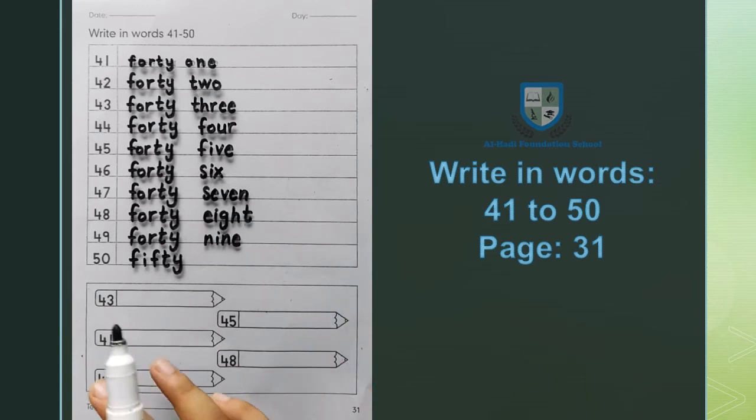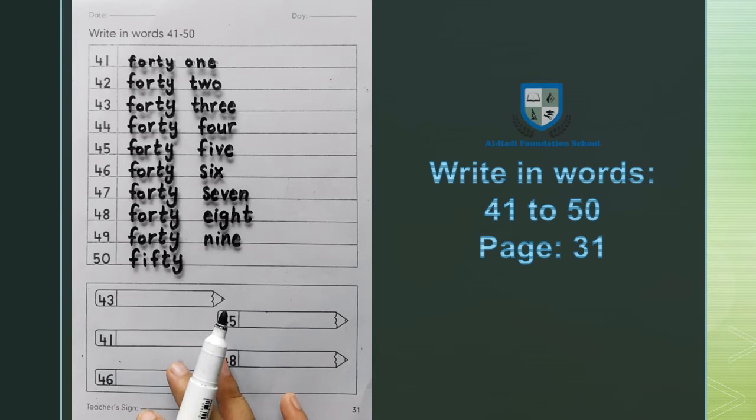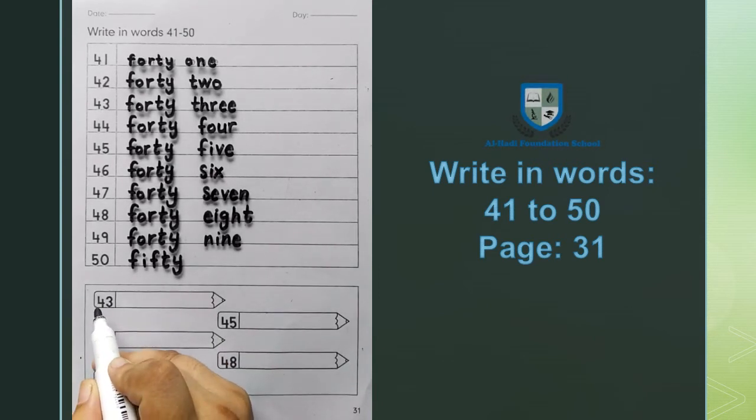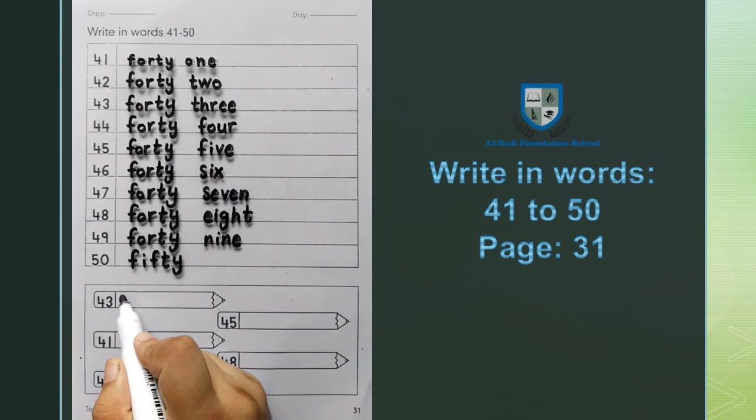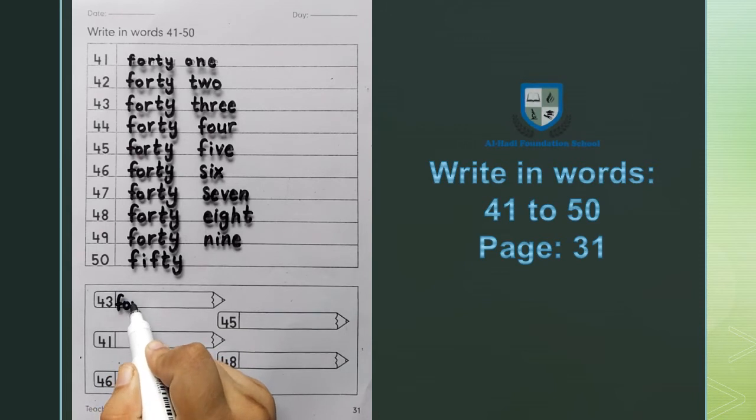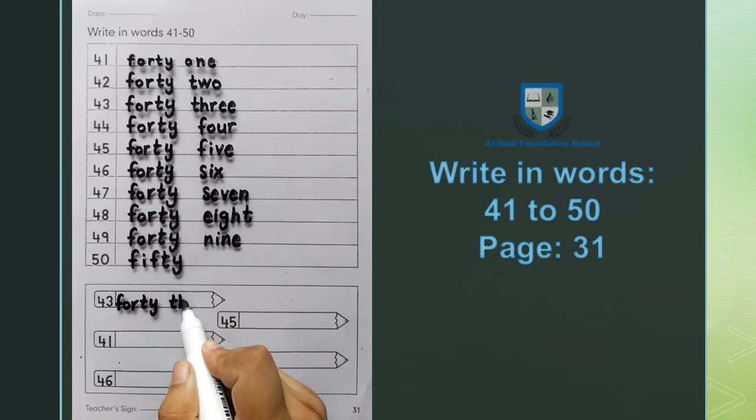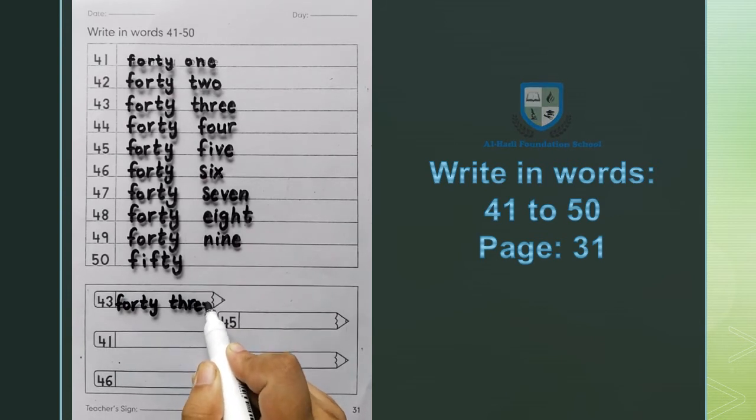Now we have the second part, numbers in words. First number is 43. We write 43: F O R T Y, forty, T H R E E, three, forty three. Next 45.